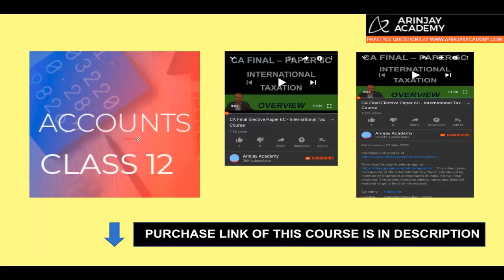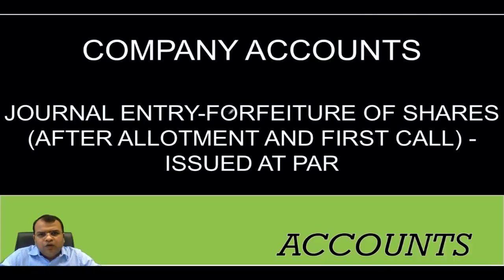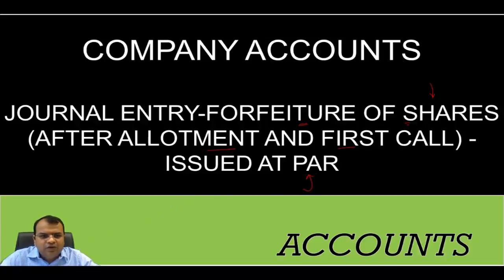Thanks for watching this video on accounts class 12th. If you want to purchase the entire course, you can click the link in the description of this video, or if you're watching this on mobile, you can click the downward arrow to find the link. Now, what will be the journal entry if there is a forfeiture of shares after allotment and first call, and these shares were issued at par? Let us look at that.